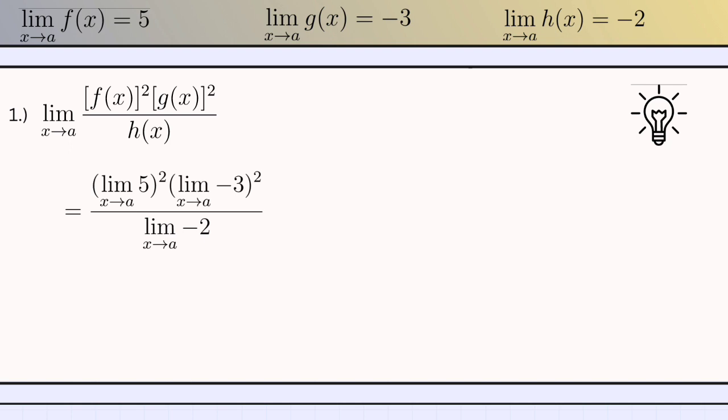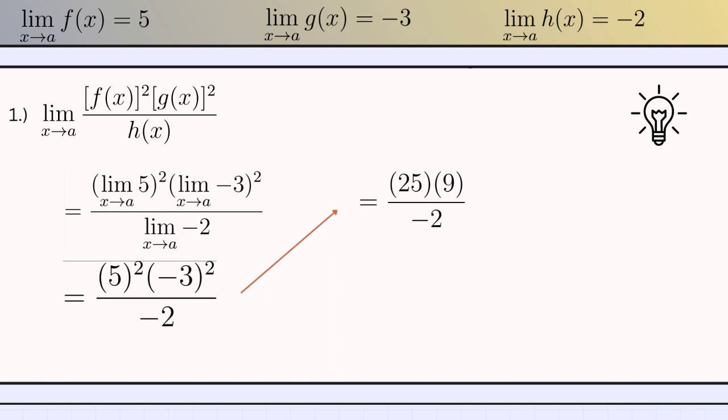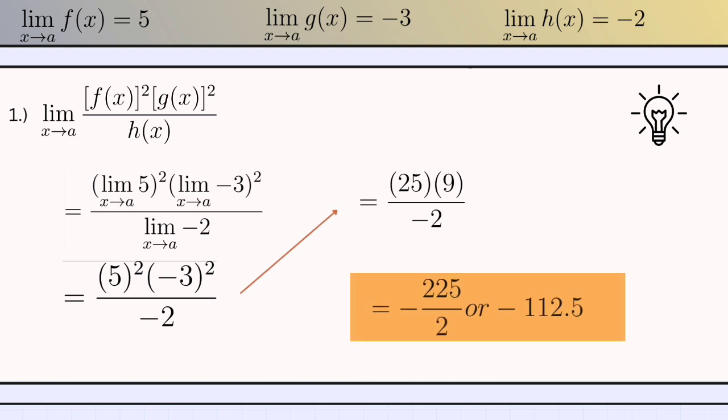Using theorem number 7, we know that we should find the limit of the function inside the parentheses first. But we also know that theorem number 1 says that the limit is the constant itself. So the answer would be 5 squared times negative 3 squared, all over negative 2. Now we just simplify: 25 times 9 all over negative 2, and the answer would be negative 225 divided by 2, or negative 112.5.